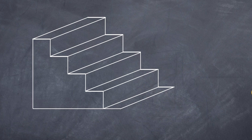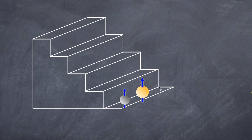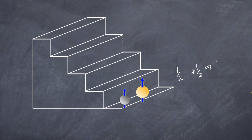Now let's consider neutrons. Take deuterium — hydrogen with an extra neutron. Here's one proton and one neutron. You'll notice they have the same spin direction, but that's allowed because they're different subatomic particles. As a result, we have a net spin of +1/2 from the proton and +1/2 from the neutron, giving a net spin of one. Deuterium's nucleus has a net spin of one.